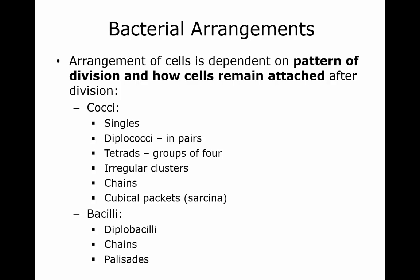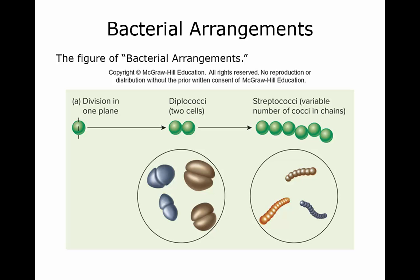How these cells are arranged is dependent on the pattern of division and how they're going to stay attached. Looking here, you can see the cocci cells. They can be arranged in singles where there's just one of them. Here is an example of diplococci where they are paired, and streptococci where they're in chains.